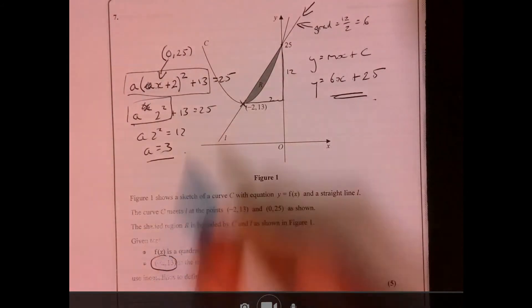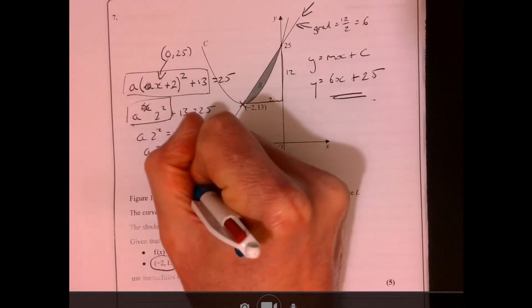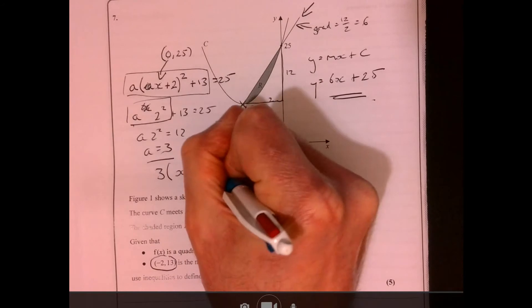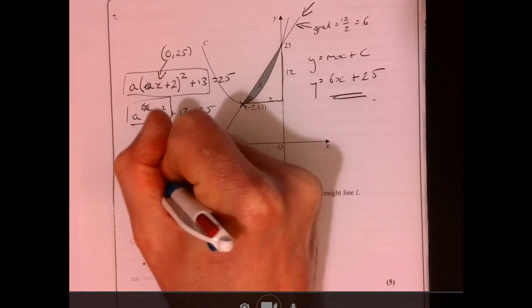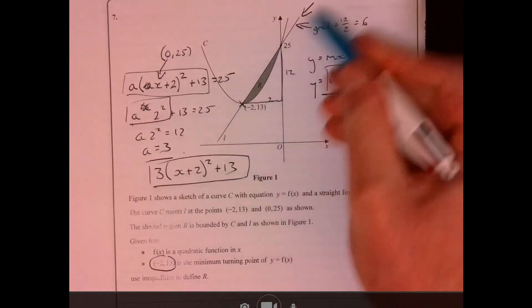So this quadratic has to be 3(x plus 2)² add 13, and the linear part, the line here, is 6x plus 25.